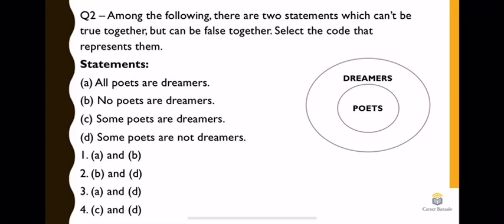Option B says no poets are dreamers. This is completely opposite to option A. No poets are dreamers means the poets circle and dreamers circle should not be linked with each other. Option C says some poets are dreamers, which is false. Option D says some poets are non-dreamers, also false. This question was easiest. Option A and B cannot stand together. Option A says all poets are dreamers, option B says no poets are dreamers. That is absolutely not possible. Using elimination, answer is option first, statements A and B are correct.